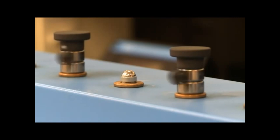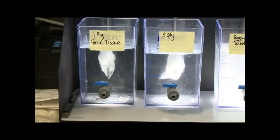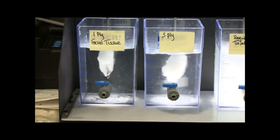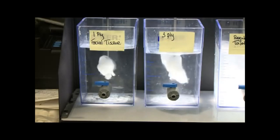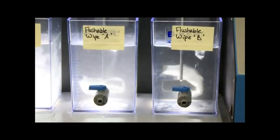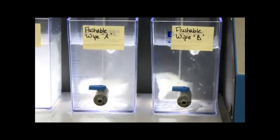Toilet paper is specifically designed to fall apart when you flush it, and facial tissue is designed to not fall apart when you blow your nose in it. As you can see, it's not falling apart. And the wipes? What you're seeing is not much.